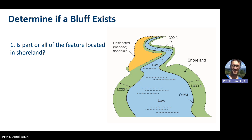So now let's go through each of the four parts of the bluff definition. The first item asks: is part or all of the slope feature located in shoreland? Shoreland is 1,000 feet from the ordinary high water level of a lake and 300 feet from the top of a riverbank, shown here in green. If there are any potential bluffs partially located in shoreland, we still need to evaluate them. If they meet the bluff definition, we would then apply the relevant bluff regulations to that part of the bluff located in shoreland. For example, if the lower part of a bluff is located in shoreland but the upper part is not, one could not intensely remove vegetation from the lower part, but you could in the upper part.